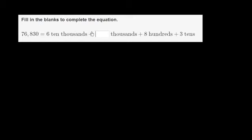Fill in the blanks to complete the equation. They have 76,830 equals 6 ten thousands plus blank thousands plus 8 hundreds plus 3 tens. So let's think about 76,830.